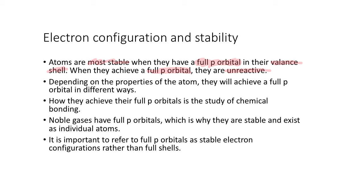So depending on the properties of an atom, ideally also their electronegativity and first ionization energy, they will achieve a full P orbital in different ways. So they're still trying to get a full P orbital, but there are different ways to do it.